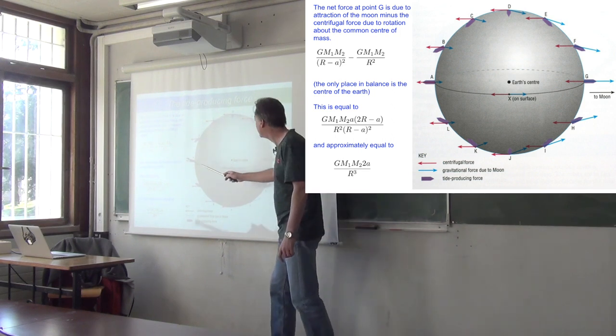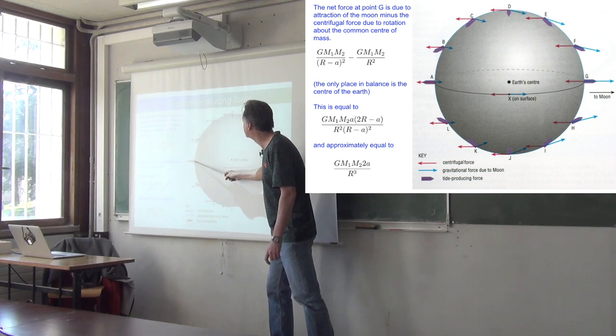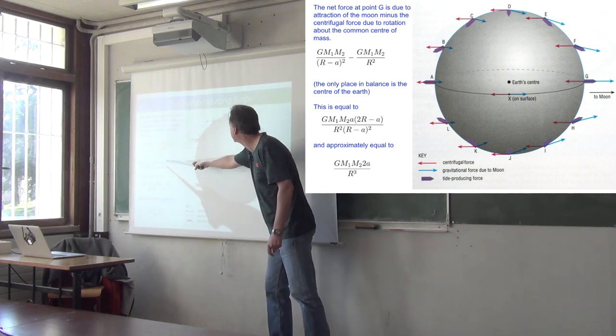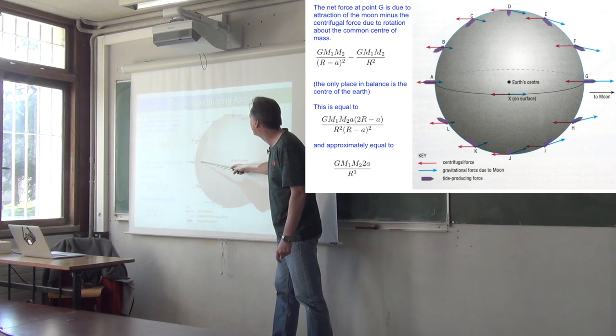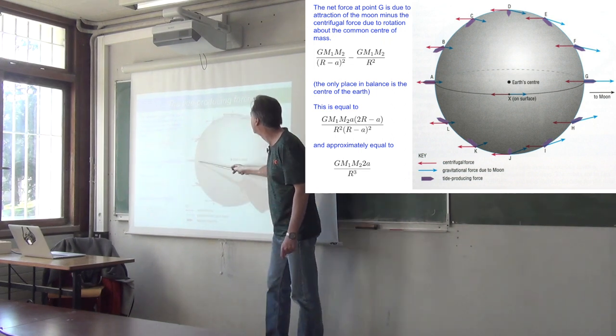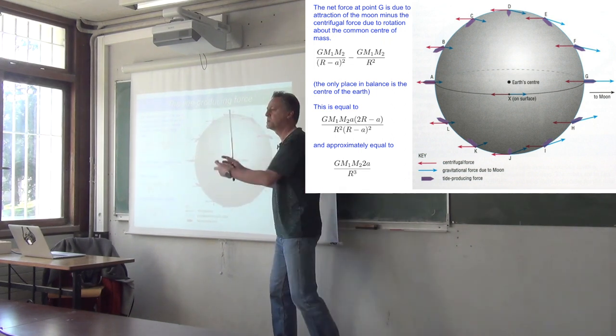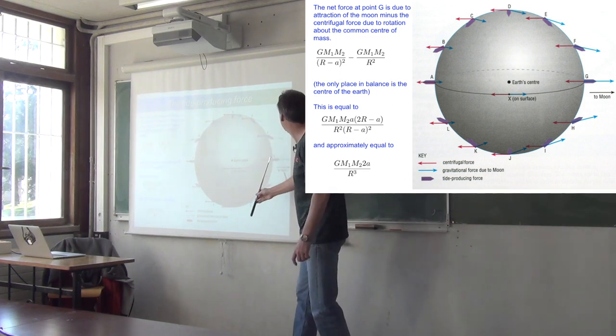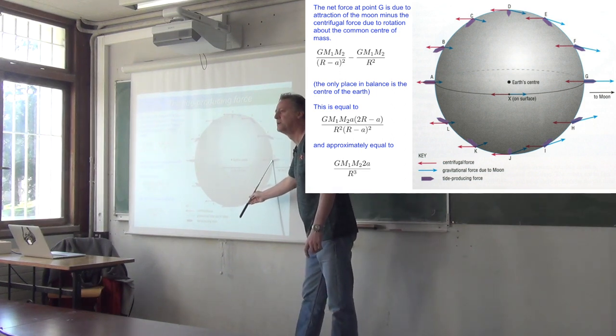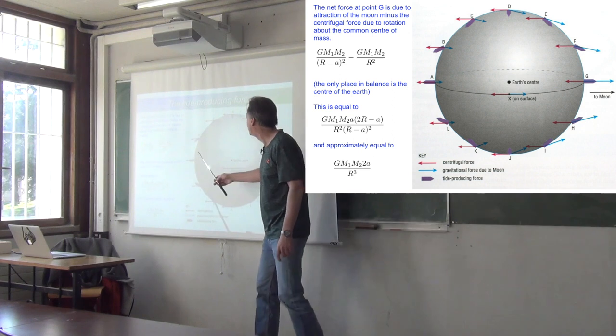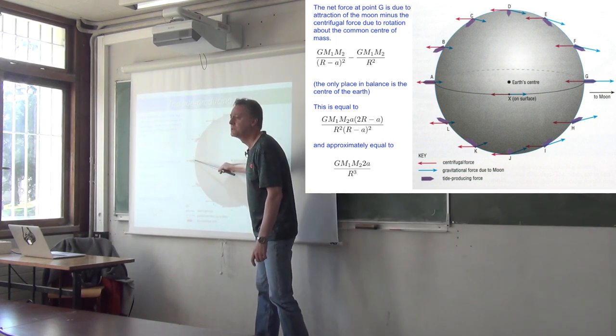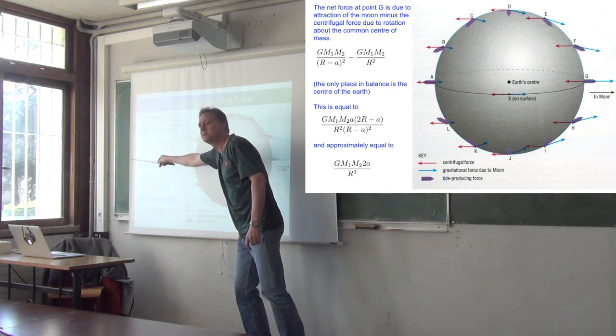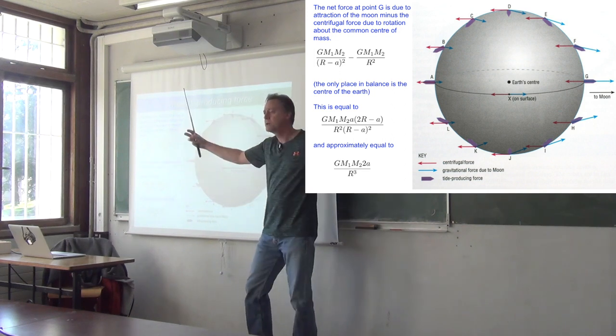And you have a net force towards the Moon. On the opposite side of the Earth, the net force is away from the Moon because the centrifugal force is the same but gravity is a bit weaker. You have an R plus A here. So there's a stretching effect. On this side, on the side facing the Moon, the ocean is attracted to the Moon. On the side opposite the Moon, the ocean is pushed in the opposite direction to the Moon. So there's a kind of stretching effect.